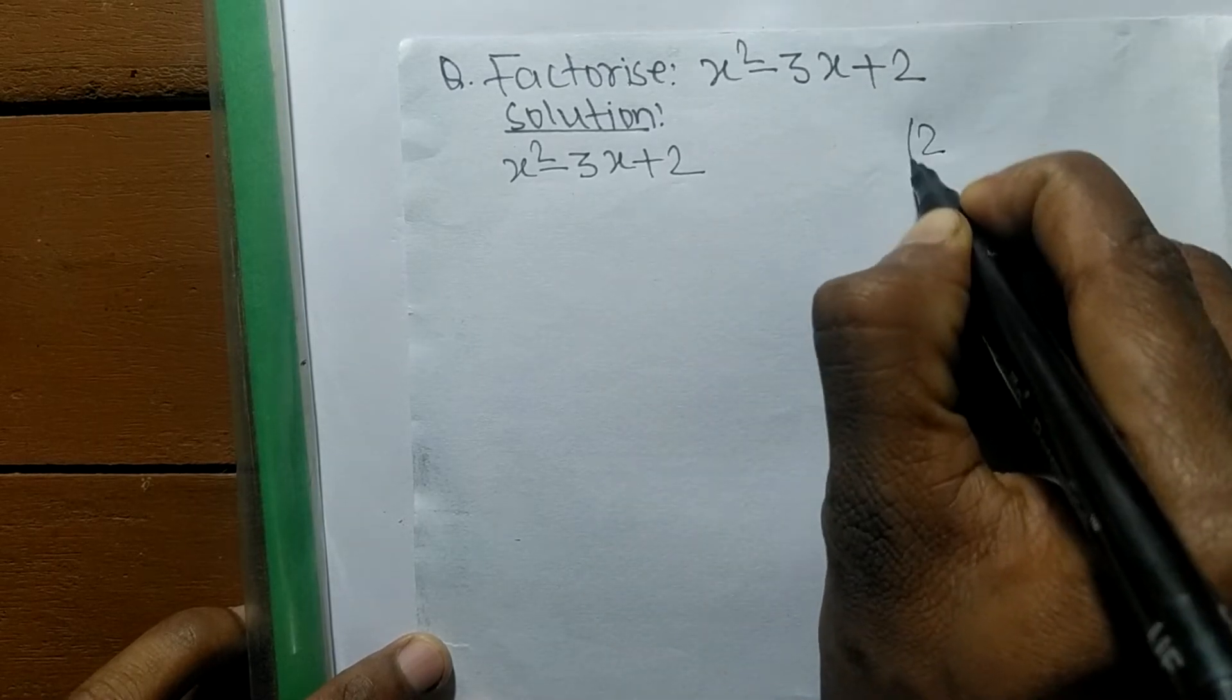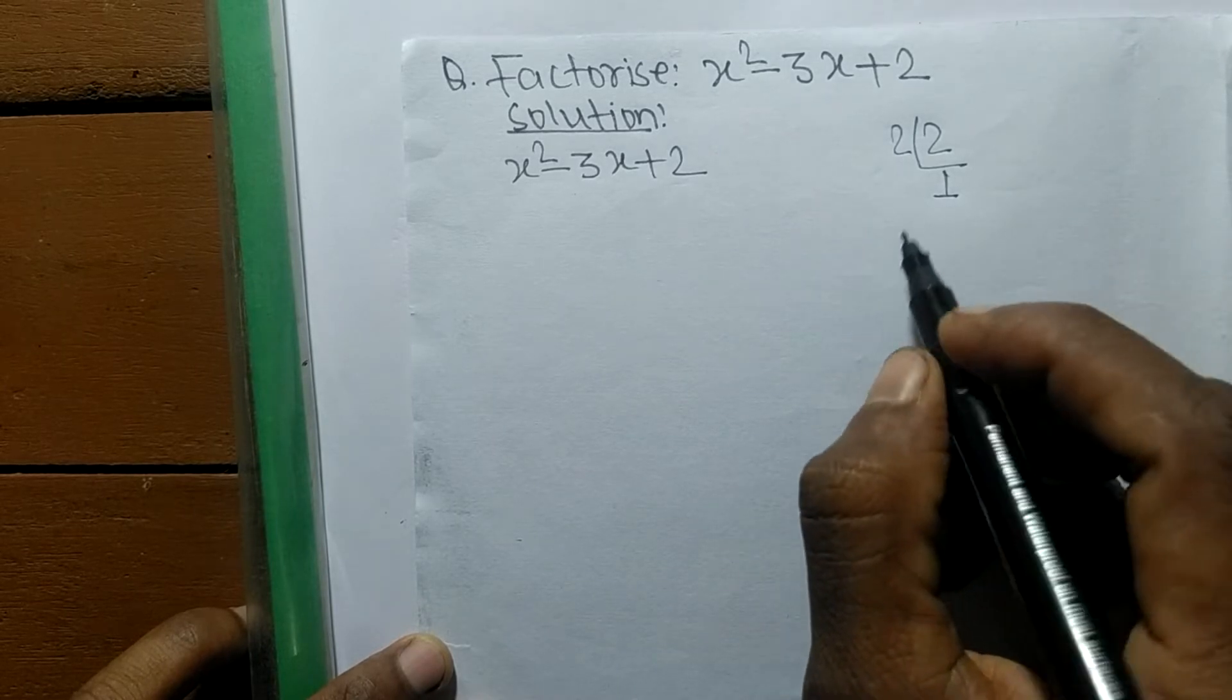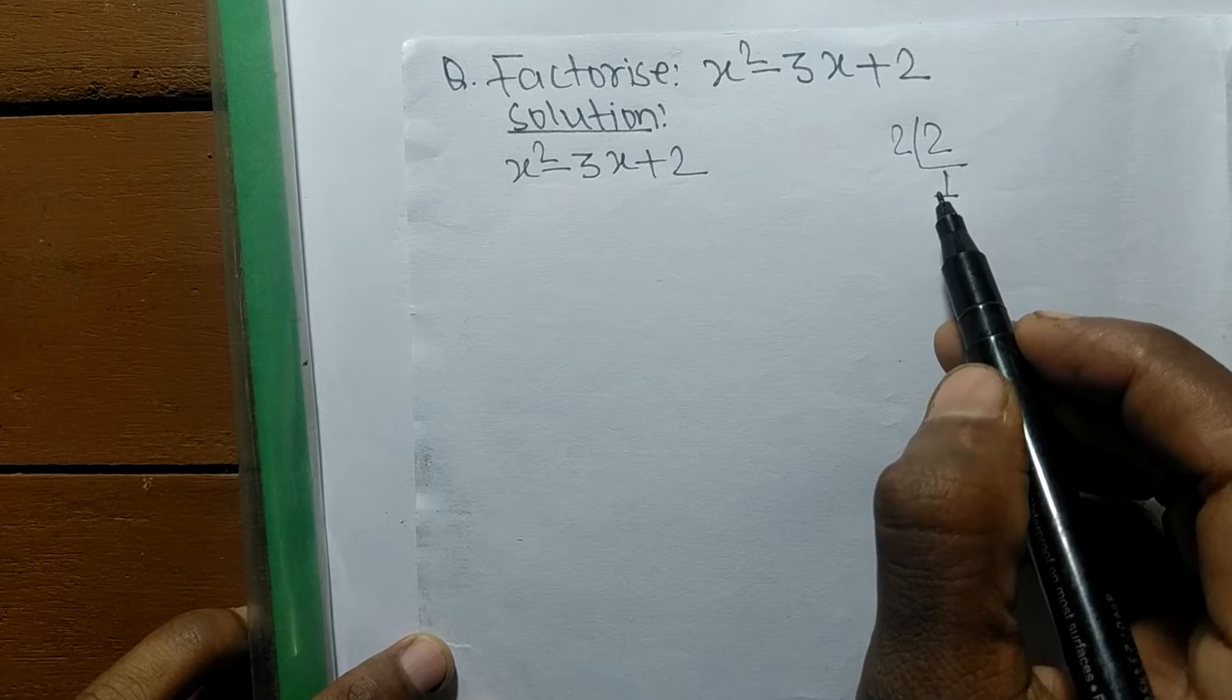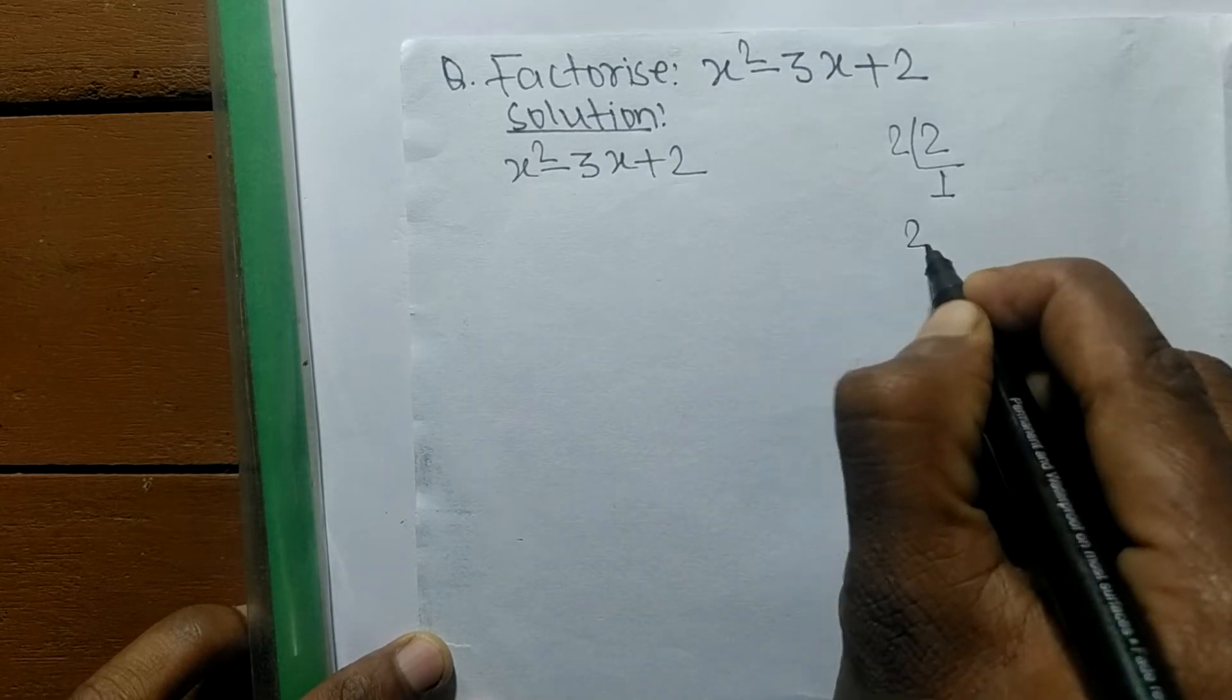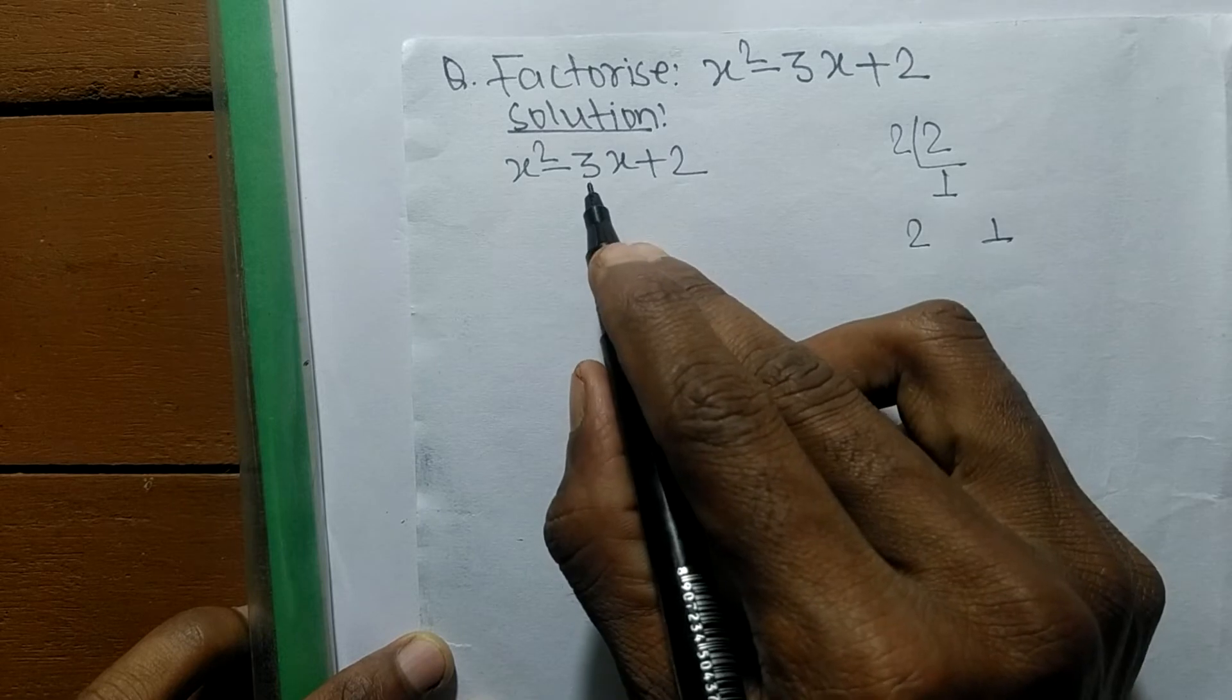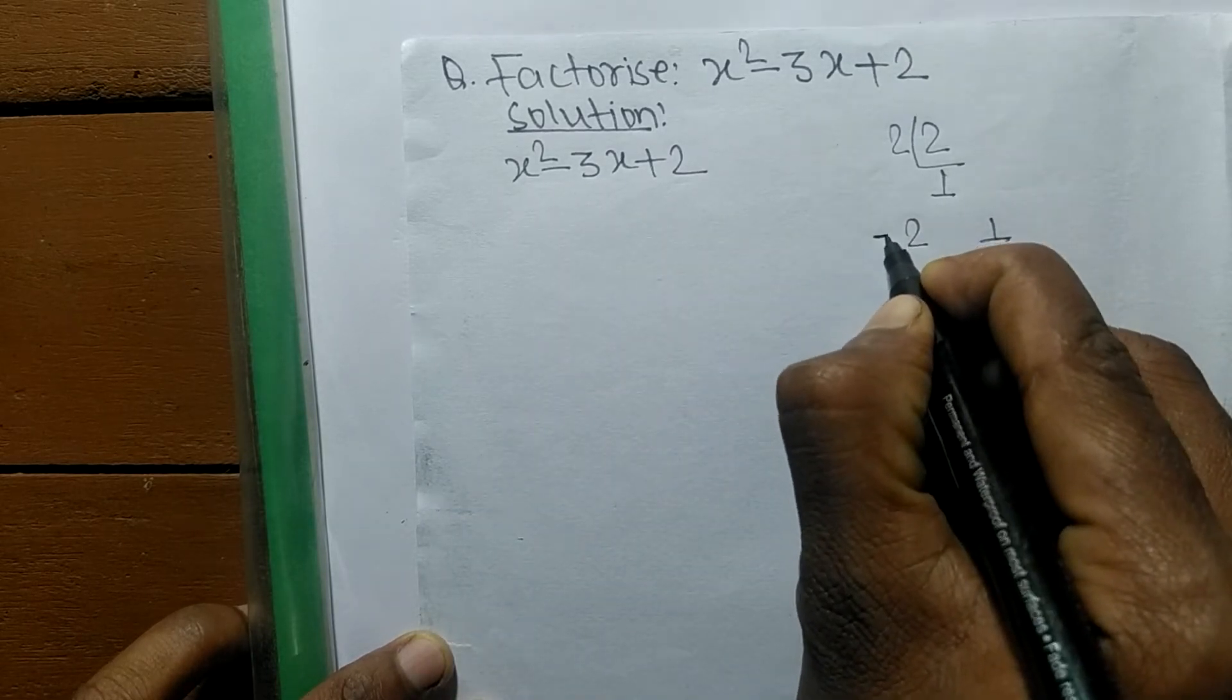So it is 2 times 1 means 2. By multiplying these numbers we have to find out such a number that by adding we get the result 3. So the numbers are 2 and 1. So 2 plus 1 means it is 3. We have to take here minus 3, so minus 2 and minus 1 means it is minus 3.